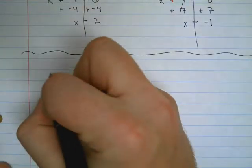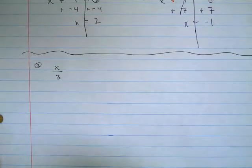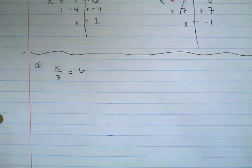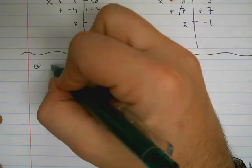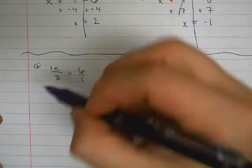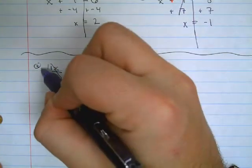If I'm looking at x over 3 equals 6, we'll turn everything into fractions, writing in our hidden ones. Now the fraction I want to get rid of is the 1 over 3, so I'll use 3 over 1.